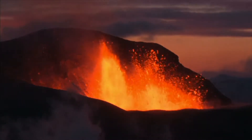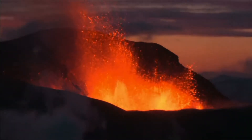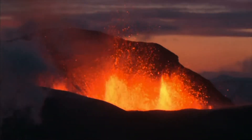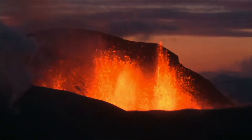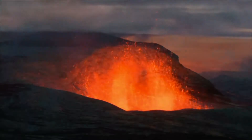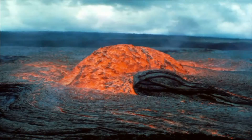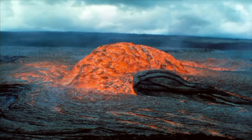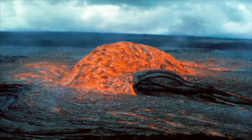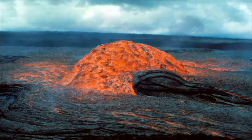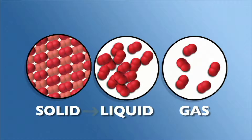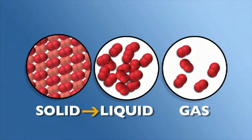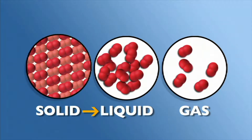At extremely high temperatures, solid rock will melt and go through a change of state — it becomes lava, or liquid rock. The rock moves from the solid phase of matter to the liquid phase.